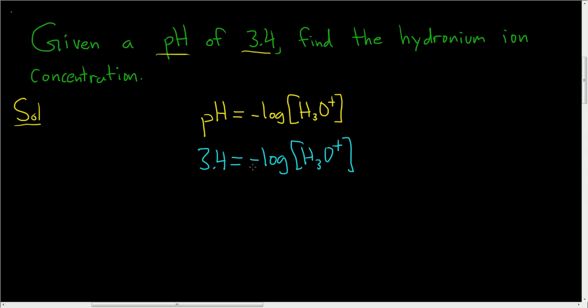Now before we solve this, we have to get rid of the negative sign. You can either divide both sides by negative 1 or multiply. That will leave you with negative 3.4 equals the log of the hydronium ion concentration.